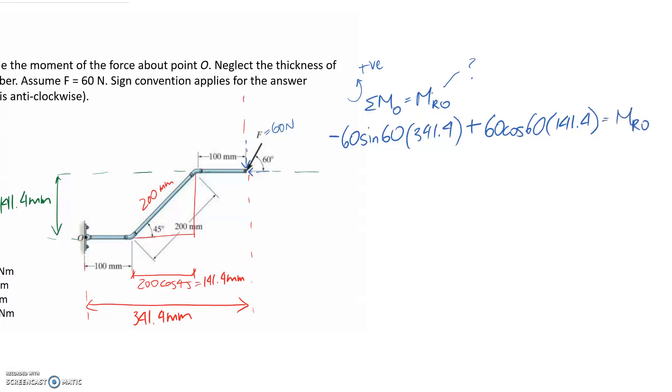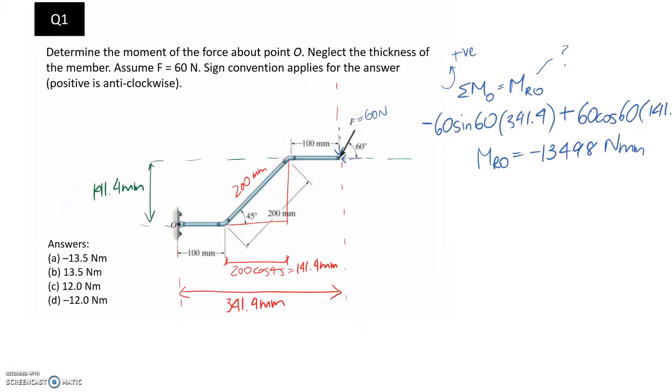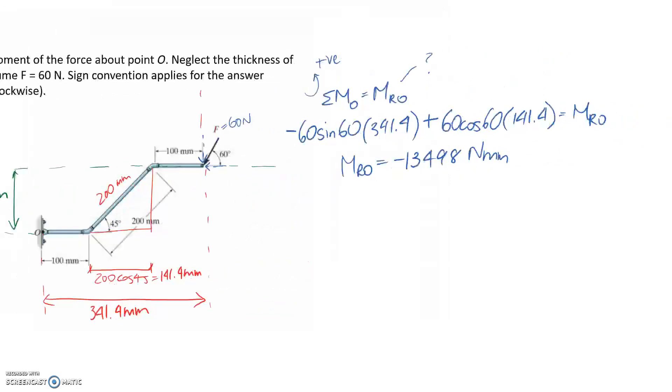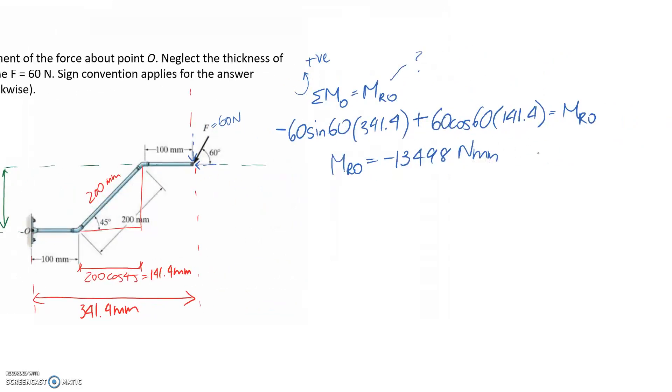And all this is equal to the resultant moment that we're trying to calculate. So if you put this into your calculator, it's going to come out as negative 13498. Now, the units for it, we had our force in newtons, and we had our distances all in millimeters. So a moment is a force times a distance, so it's going to be newtons times millimeters. Now, if we go back over here, all the answers are in newton meters. So we're going to need to perform a conversion. To go from millimeters into meters, we times by 10 to the negative 3, and that means we get about 13.5 newton meters.